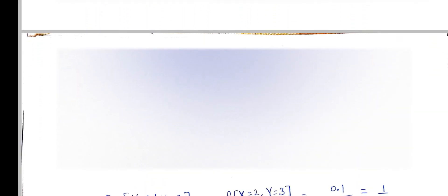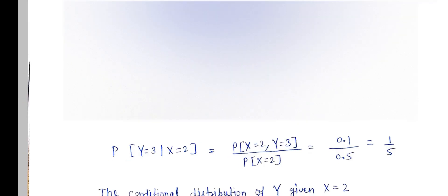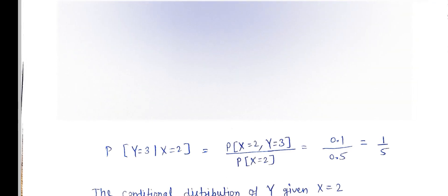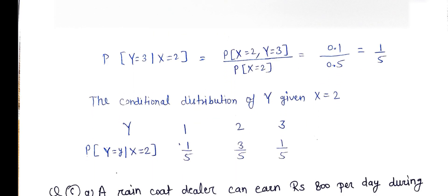So, after the calculation, 1 over 5 and so on, because X equals 2 is fixed, but Y value is changing: Y equals 1, Y equals 2, and Y equals 3. So, these are the conditional distribution of Y given X equals 2.